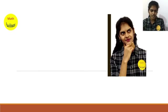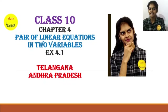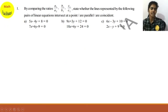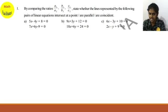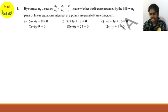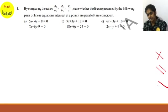Hello everyone, I am Divya, your math facilitator. Today we are going to discuss Exercise 4.1 of the chapter 'Pair of Linear Equations in Two Variables.' By comparing the ratios a1/a2, b1/b2, c1/c2, you need to state whether the lines represented by the following pairs of linear equations intersect at a point, are parallel, or are coincident.